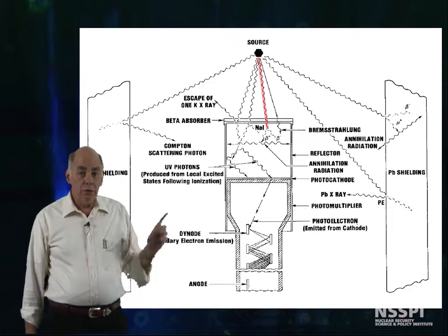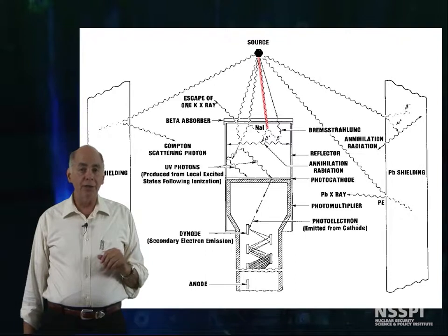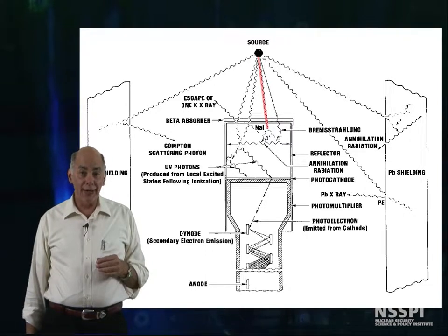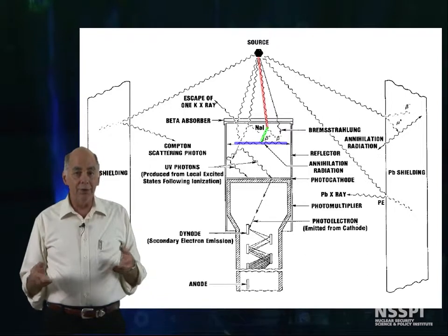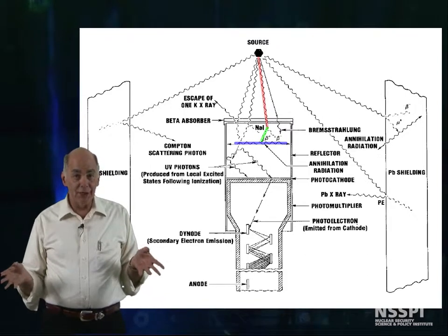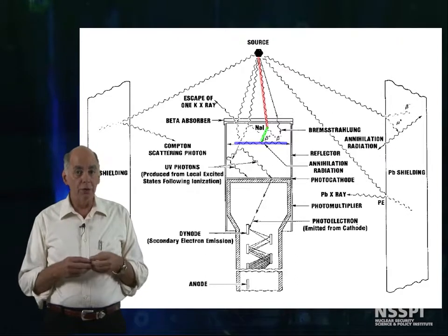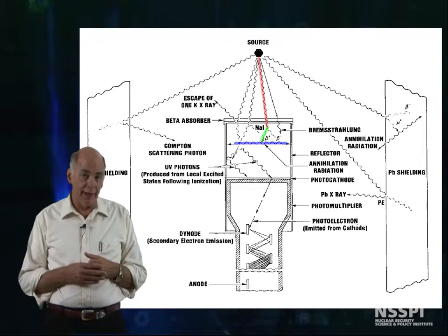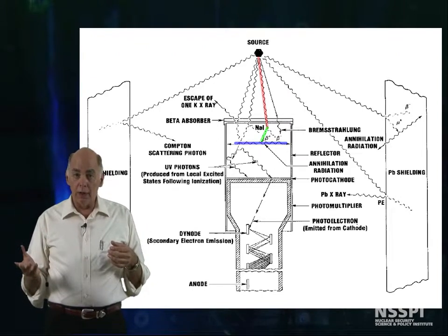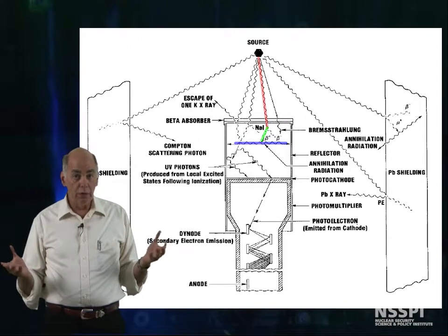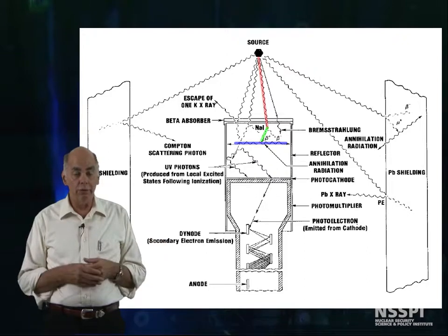If we choose this gamma coming from the source, we see that it interacts by pair production in the detector, creating a positron and an electron. The positron, after depositing its kinetic energy, interacts with an electron and creates two annihilation photons, each having 511 keV. One or both of the photons can escape the detector, or both could interact within the detector itself to create a full energy peak.